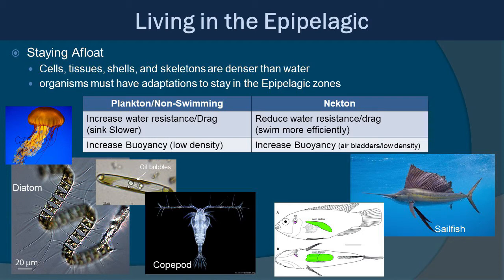Another adaptation is increasing buoyancy through low-density compounds. Some diatoms contain oil bubbles — oil is less dense than water — which helps them float. The jellyfish shown doesn't have any skeletal system, so that reduction in density gives it more help staying up in the water column as well. These are all different methodologies for staying in the epipelagic.